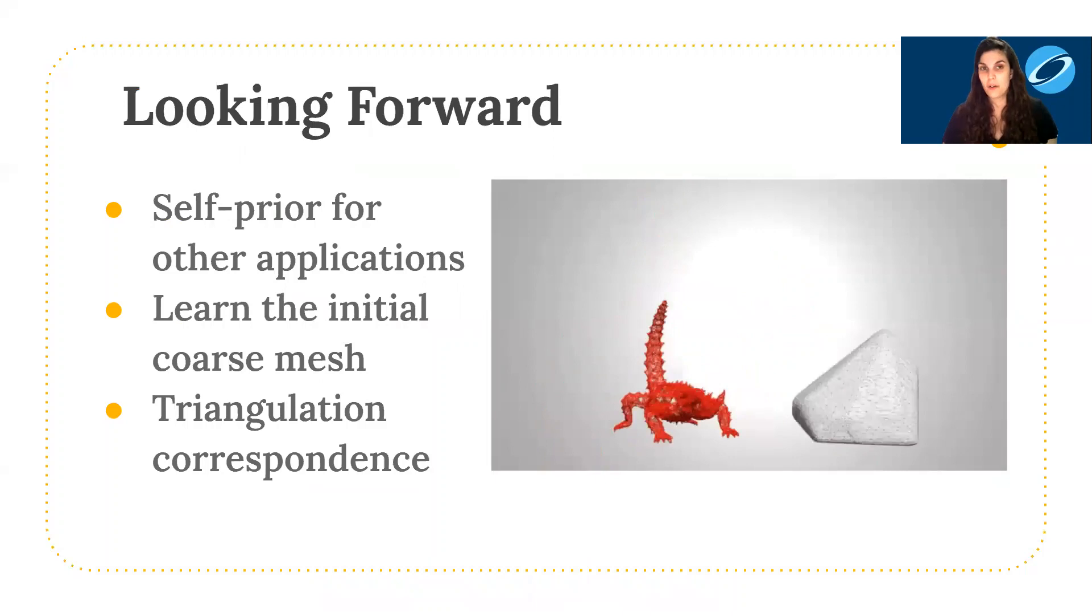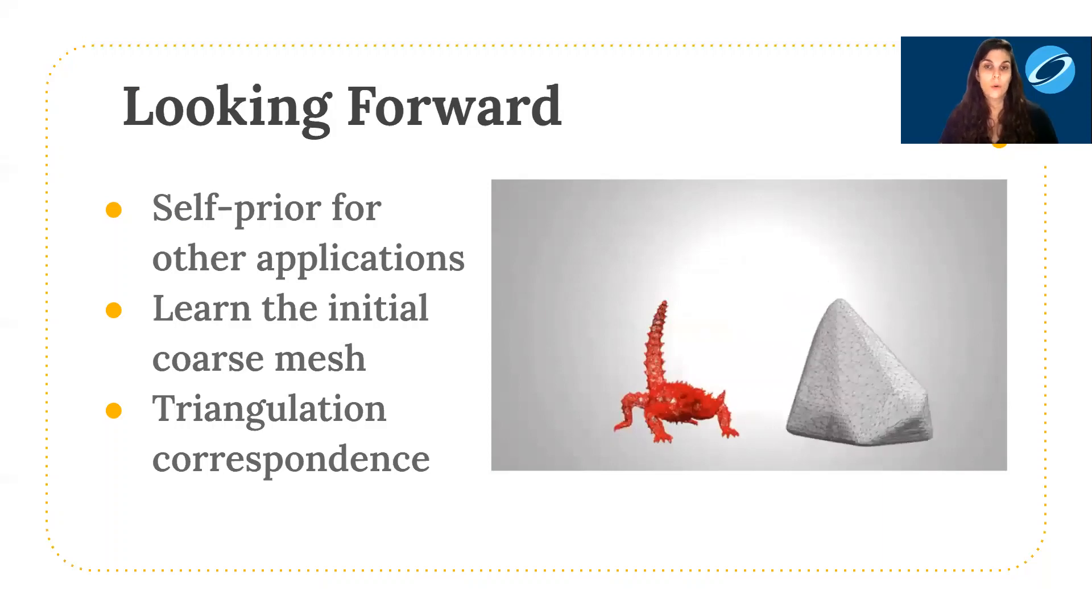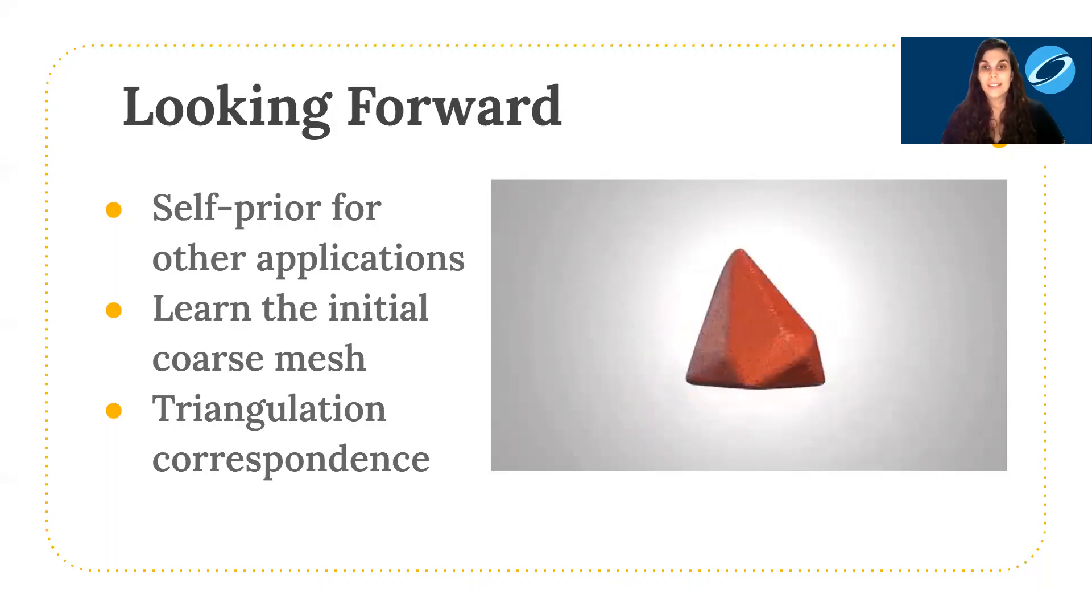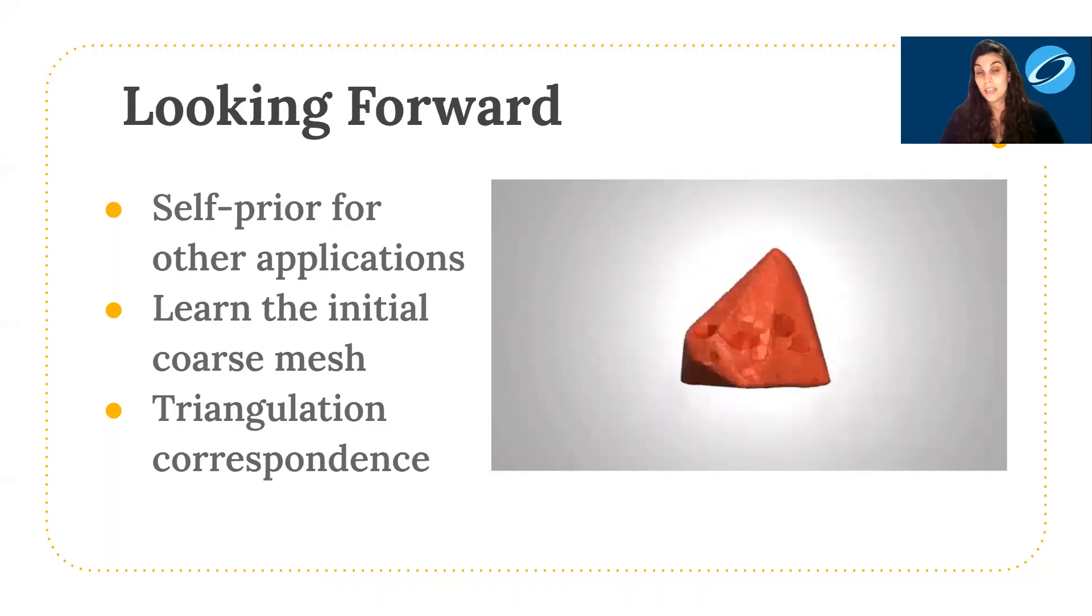So looking forward, there are some interesting follow-up directions. It would be cool to see what other 3D regression applications might also benefit from the use of a neural self-prior. Another interesting route is to learn the initial coarse mesh, which could make it more robust to non-zero genus cases where Poisson reconstruction may produce topological errors. Finally, another avenue to consider is using shrink wrapping across different shapes for connectivity correspondence.